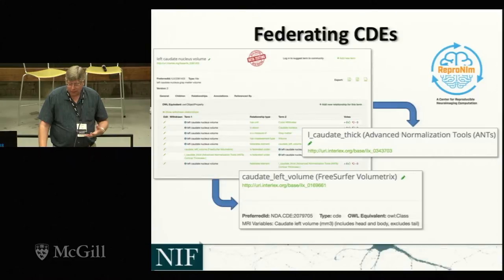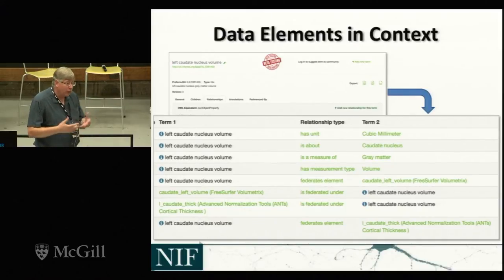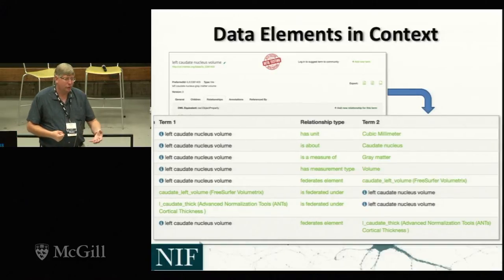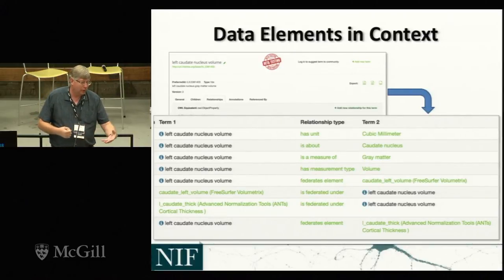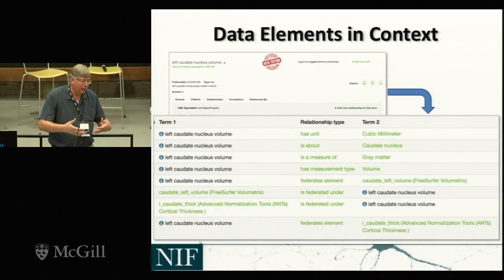We've been incorporating these federating elements within Interlex so that they have context — we can use the rest of the ontology to do more refined searches. When we have an element linking together individual CDEs around caudate volume, we know it's actually a measurement about the caudate nucleus and it's linked into the terminology. This gets to the whole concept of interoperability and FAIR — not building a silo, but incorporating new elements into existing context so you can do semantically enhanced queries, such as finding all data about volume of subcortical structures and finding all the common data elements that relate to that.